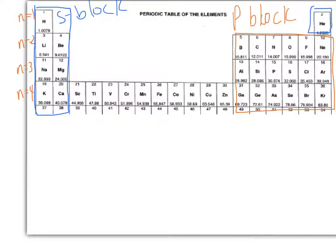And then here, even though we just have a smidge of it, this is the d block, also called the transition metals.